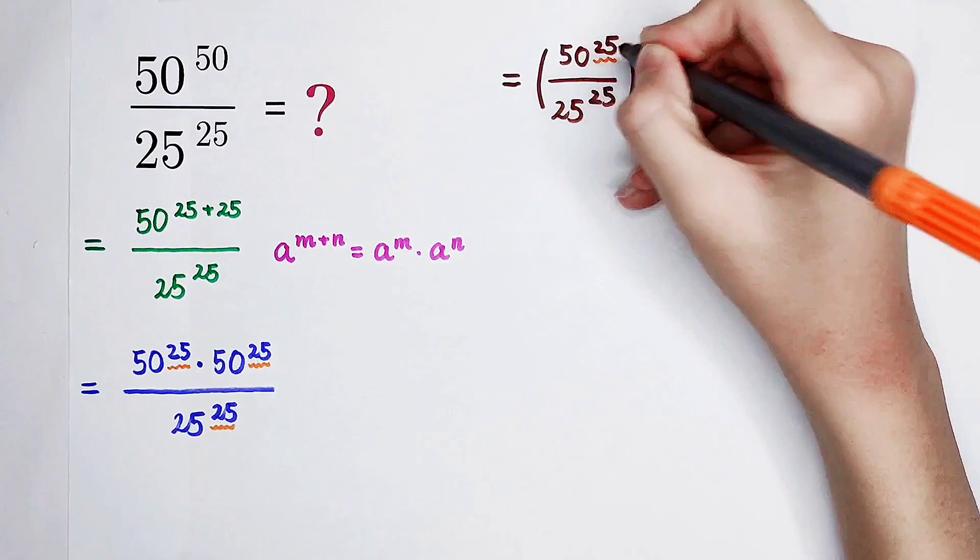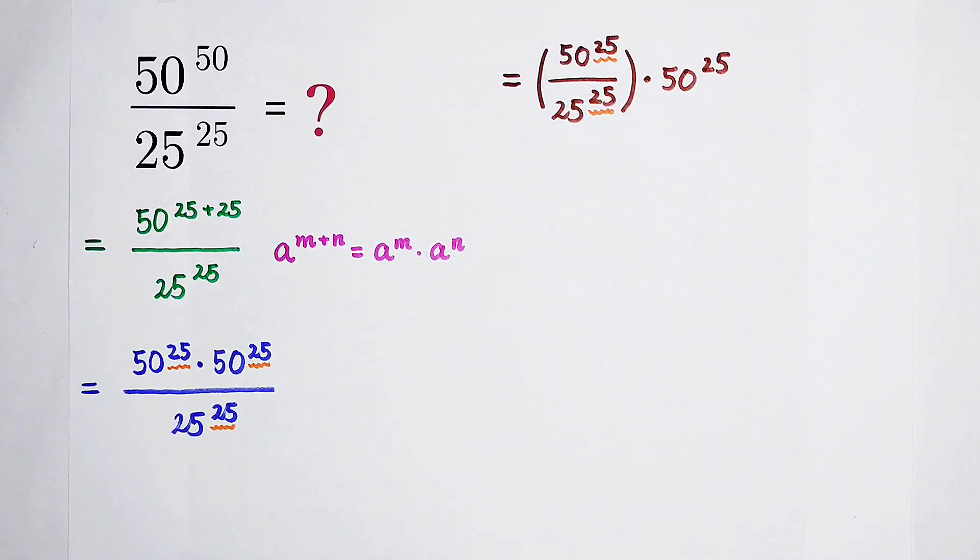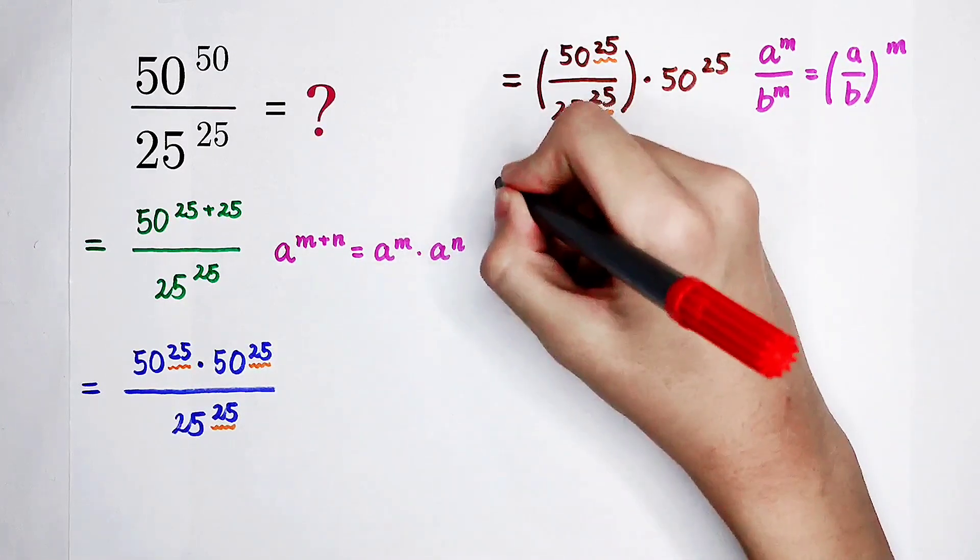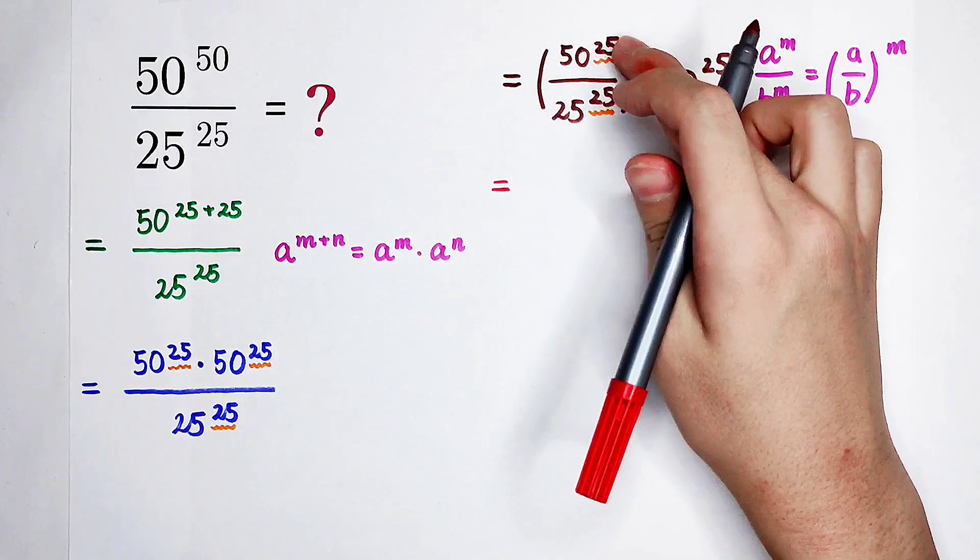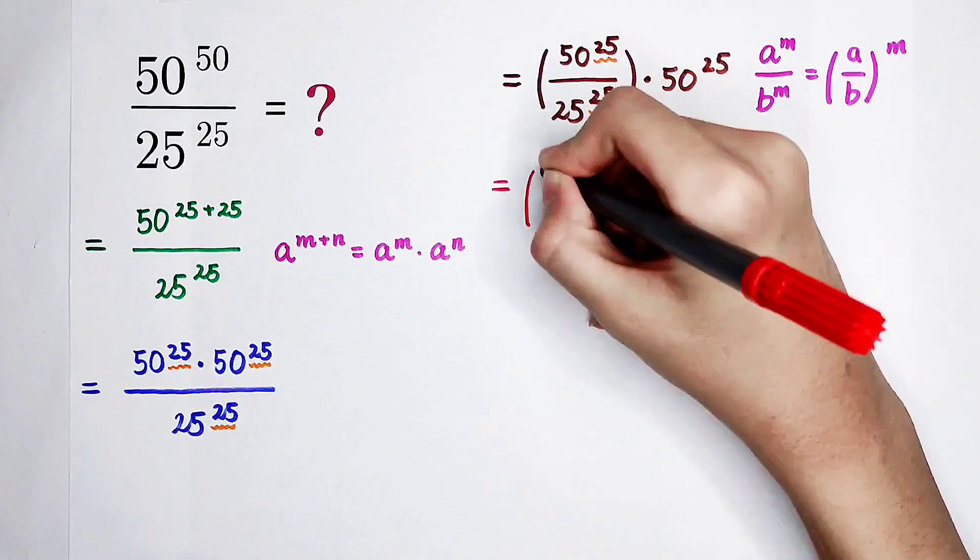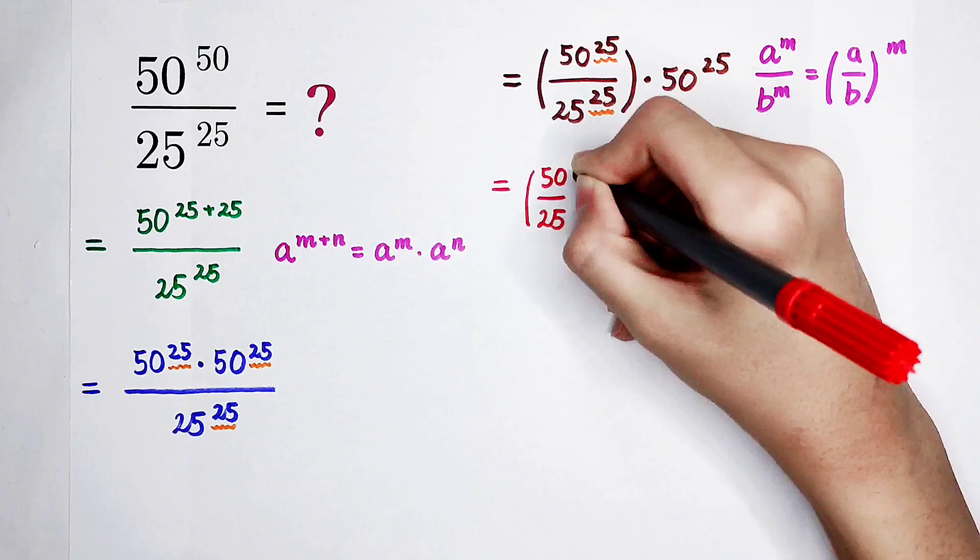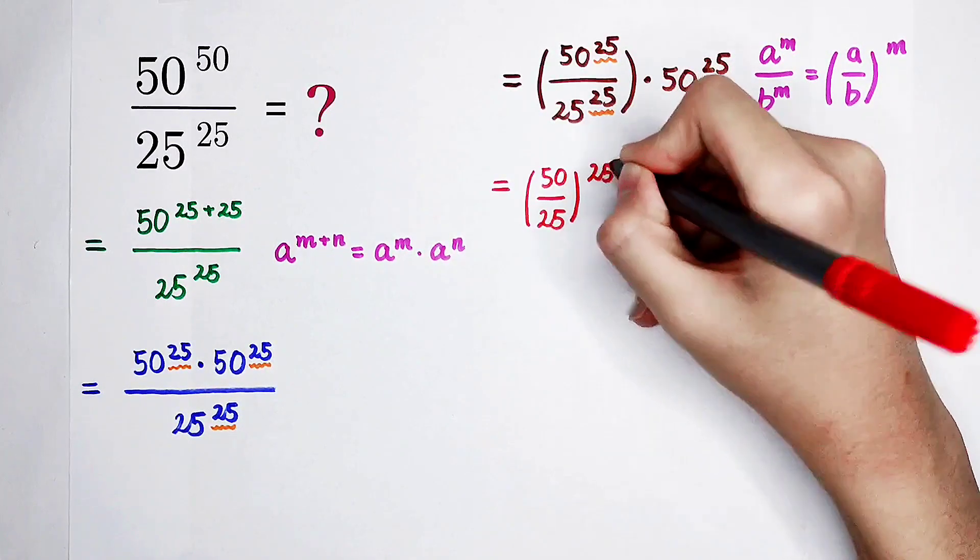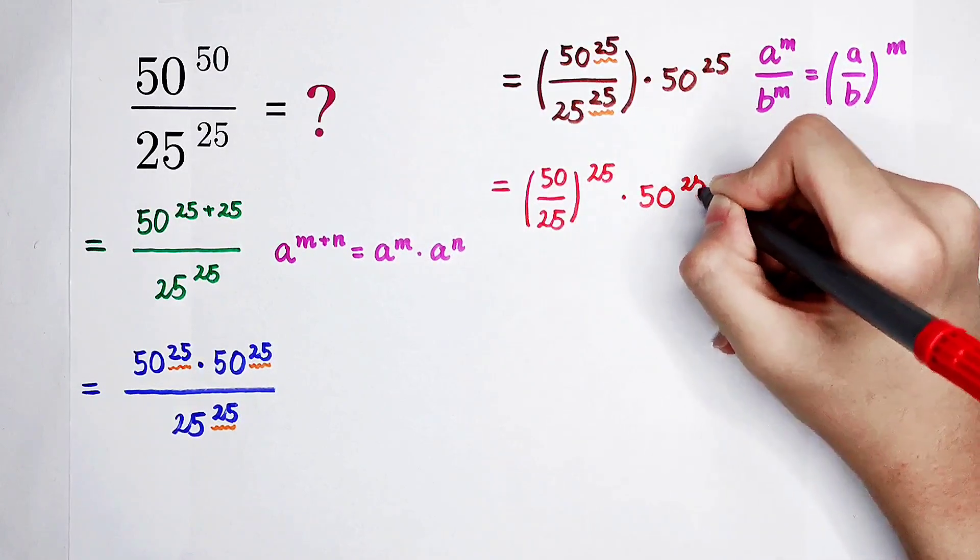They have the same exponents, the denominator and the numerator. This formula could help you. So now what I'm going to do is let this 25 jump out from the bracket. So it is going to be like 50 divided by 25, all to the power of 25, and then times 50 to the power of 25.